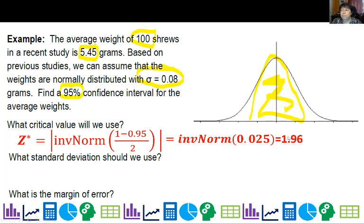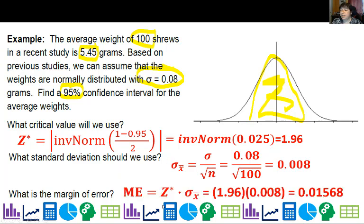Technically, if you had memorized it, you could have just said, it's 1.96. What standard deviation should we use? Well, we're dealing with sample means. So we're not going to use 0.08 exactly. We're going to divide it by the square root of the sample size. So it's 0.08 divided by square root of 100 up here, which is 0.008. My margin of error is my critical value times my standard deviation for the mean. And I get 0.01568.